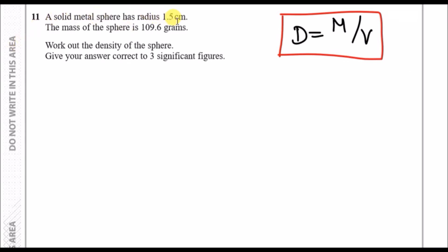So a solid metal sphere has a radius of 1.5 centimetres and the mass of the sphere is 109.6 grams — work out the density. Straightforward. Unfortunately you're not given the density formula, so I'd recommend you put this in your formula books right now: density equals mass divided by volume. The good thing here is that we have the mass, which is 109.6, however we do not have the volume.